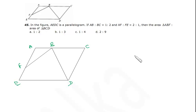AB to BC is 1 to 2, so I assume AB to be x, then BC will be 2x. AF to FE is 2 to 1, so I assume this to be 2y, so it will be y.